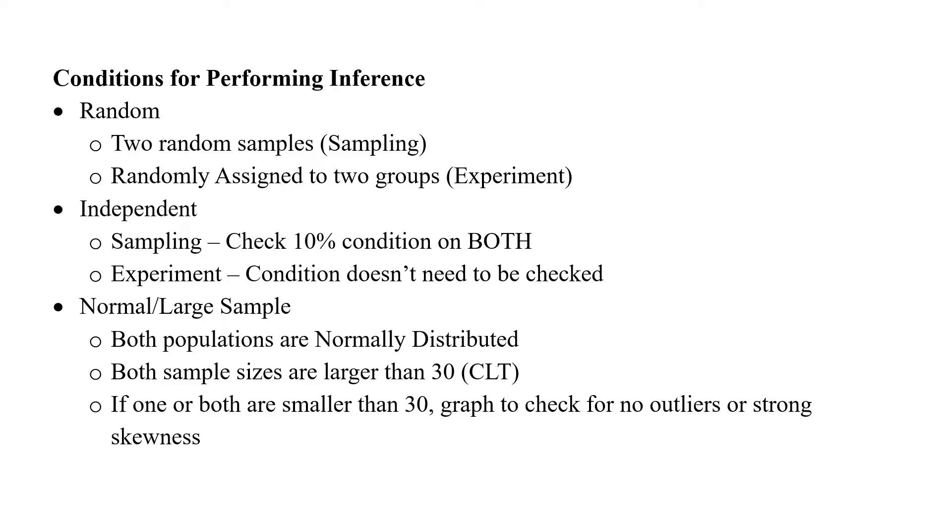And then for our nearly normal slash large sample, there's a few different ways we can meet this condition. We either can be told that both populations are normally distributed or approximately normally distributed, that both sample sizes are larger than 30, then we can invoke the CLT. But if one or both are smaller than 30, we do have to graph our sample data and check to make sure there's no outliers or strong skewness there. So those are our conditions, the same ones we just went over for a confidence interval for a difference in means.